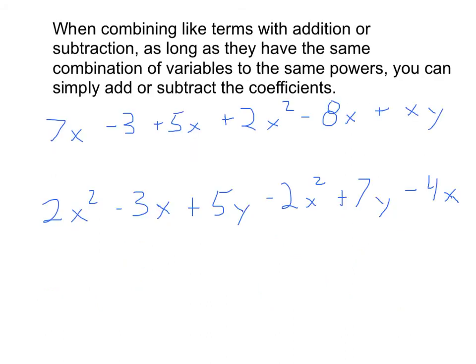Now when combining like terms with addition or subtraction, as long as they have the same combination of variables to the same powers, you can simply add or subtract the coefficients. I showed a little bit of this already, but I'll show a little bit more now. Let's say for example we have here 7x, and what is a like term with an x? It's an x to the first power.